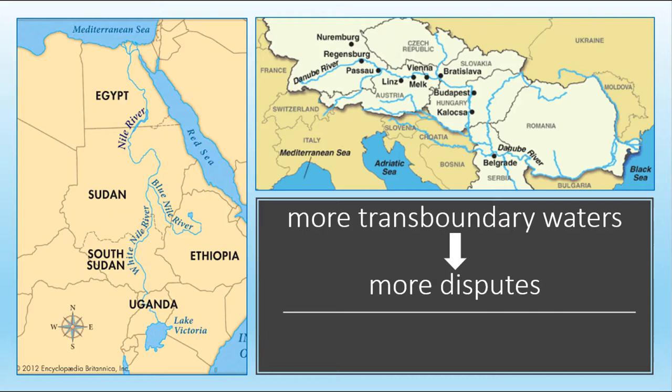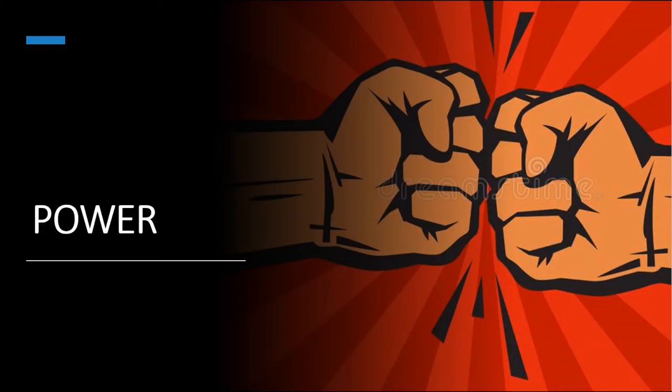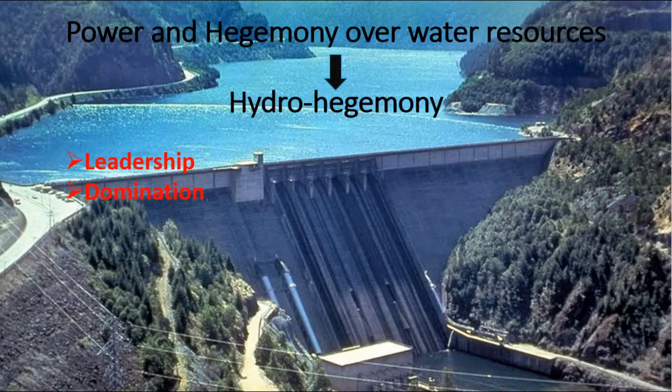Throughout the presentation, we will claim that water is more likely a source of peace than war. There are several concepts to be covered as a reason for that, most important of which is power. Power is the key factor in analyzing interstate relations including water-related issues. How power is distributed between states explains a lot about the nature of conflict or cooperation about water resources. Basically, powerful states control most of the transboundary waters and how they are utilized, usually at the expense of others.